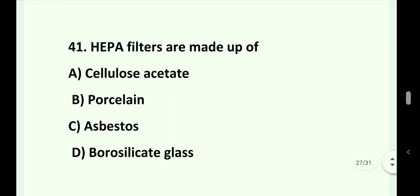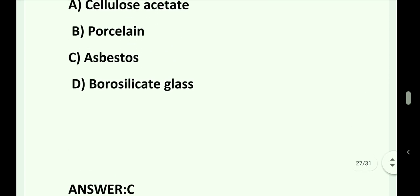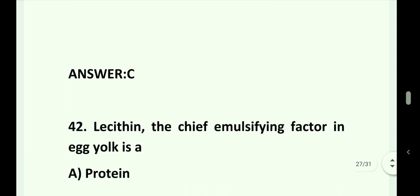Question number 41. HEPA filters are made up of: Option A. Cellulose acetate. Option B. Porcelain. Option C. Asbestos. Option D. Borosilicate glass. Answer is Option C. That is asbestos.